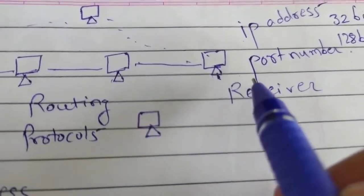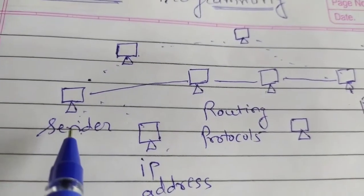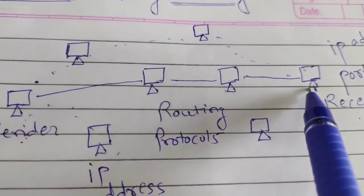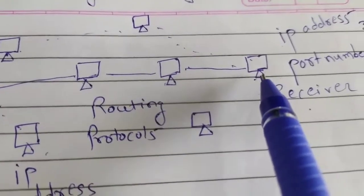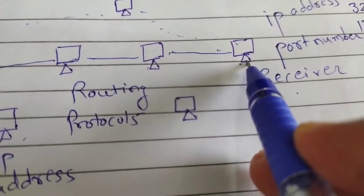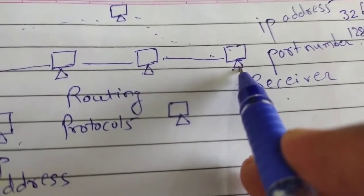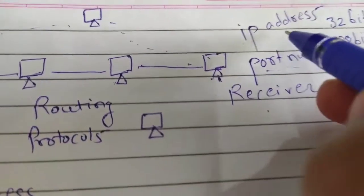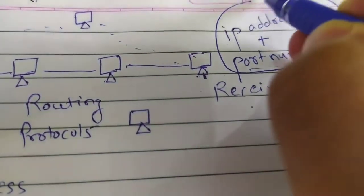Every application has a separate port number. So when you are sending a message from sender to receiver, two things are required: one is the IP address of the node, so your message reaches that node, and second, once the message arrives at that node, the port number specifies to which application the message should be delivered. When we combine both IP address and port number, that combination is called a socket.